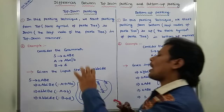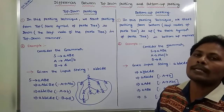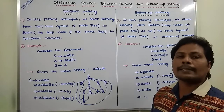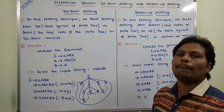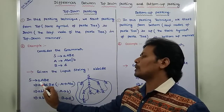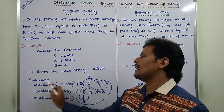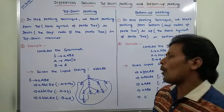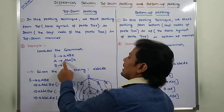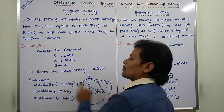We start from capital S because top-down parsing starts from the start symbol of the parse tree. So S is equal to small a, capital A, capital B, small e. Now capital A is equal to capital A, small b, small c.